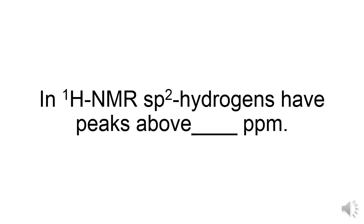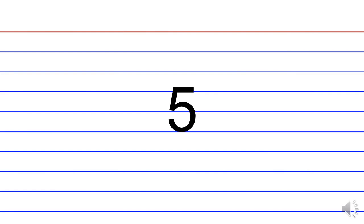In H-NMR, sp2 hydrogens have peaks above blank parts per million. sp2 just refers to a carbon that has a double bond, whether it's double bonded to another carbon, hydrogen and oxygen, or even a nitrogen. Its associated hydrogens would give a peak above blank parts per million, and above means a little bit greater than. So sp2 hydrogens would give a peak above five parts per million.